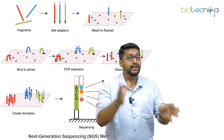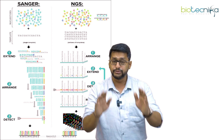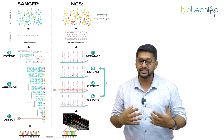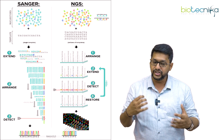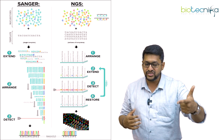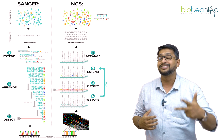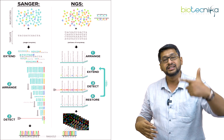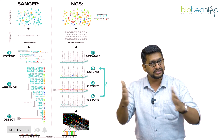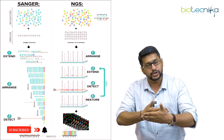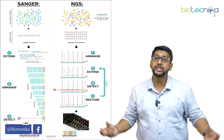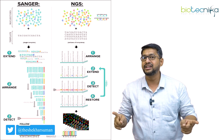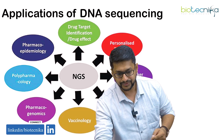Now we have understood Sanger's method and the next generation sequencing method, so you should be able to have a beautiful contrast and differentiate between the two. In Sanger's method, it is a termination method, with three major steps: extend, arrange, and detect. However, in the NGS method, you have four steps: arrange, extend, detect, and restore. Ultimately, both are trying to look into the entire sequence of nucleotides, but the methodology, the specificity, and especially the depth per read are entirely different between Sanger's method and NGS.